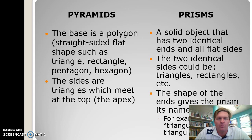First of all, we need to work out what is a pyramid and what is a prism. Let's start with the pyramid. The base is a polygon, a straight-sided flat shape. The base could be a triangle, rectangle, pentagon, or hexagon.